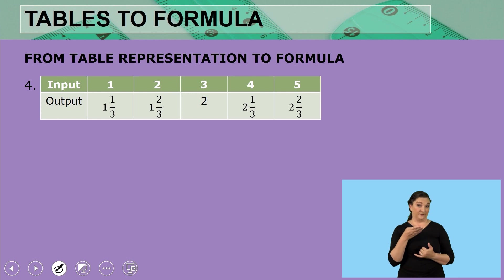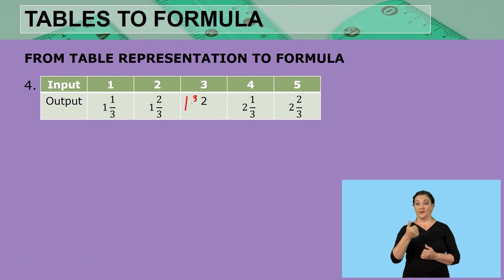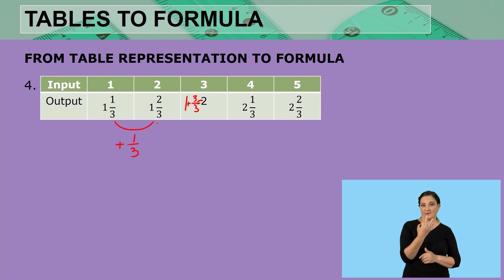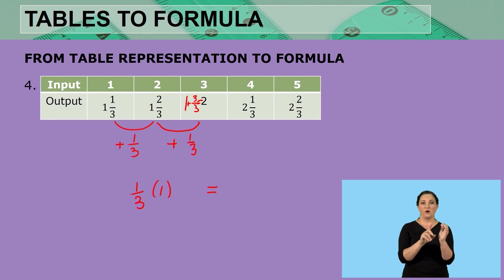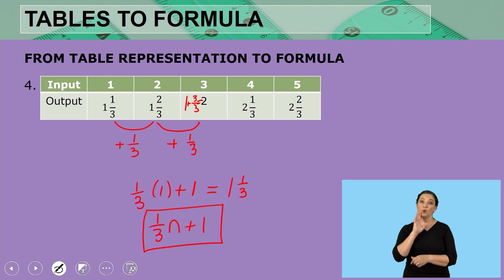The next one has output values 1 and 1 third, 1 and 2 thirds, then 2 — which is the same as 1 and 3 thirds — and the pattern continues. Each time we are adding 1 third. So the rule is 1 third multiplied by the position: 1 third multiplied by 1, plus what we add to get 1 and 1 third, which is 1. So the rule is one third n plus 1.